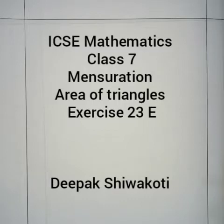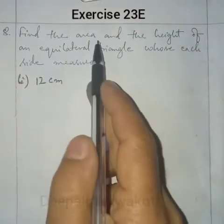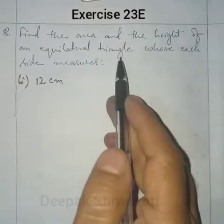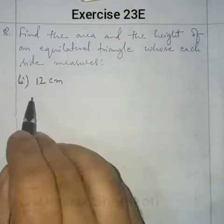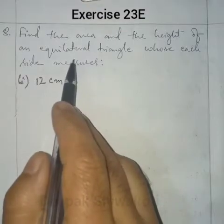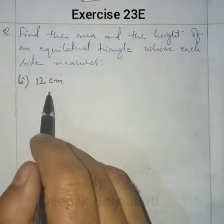Welcome to Class 7 Mathematics. We are in the Mensuration chapter — Area of Triangles. Question number 8: Find the area and the height of an equilateral triangle whose each side measures 12 cm. So we have to find the area and the height of the equilateral triangle.